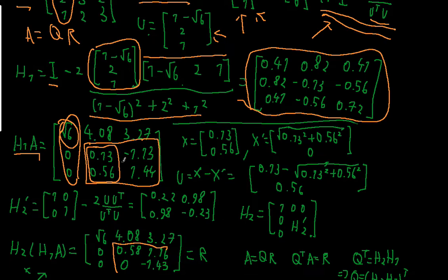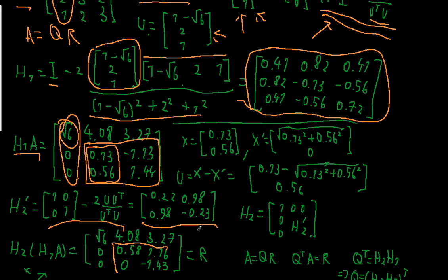So the identity matrix is also a 2x2 matrix. We plug everything in and we should get the following Householder matrix: [0.22, 0.98], [0.98, -0.23].